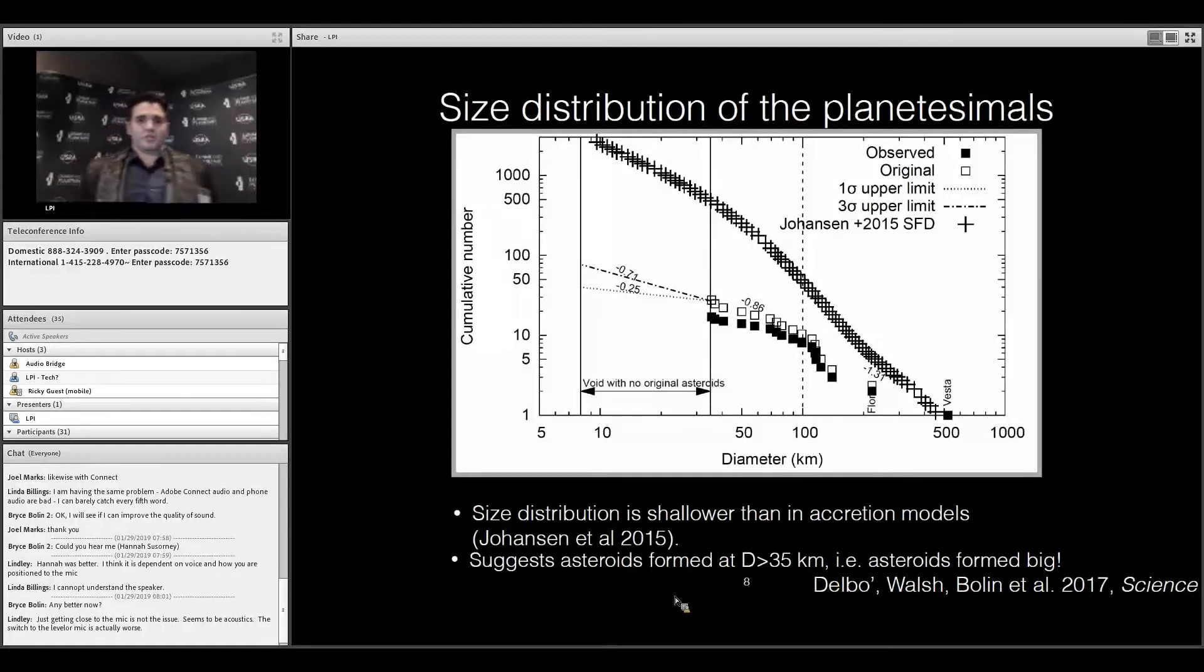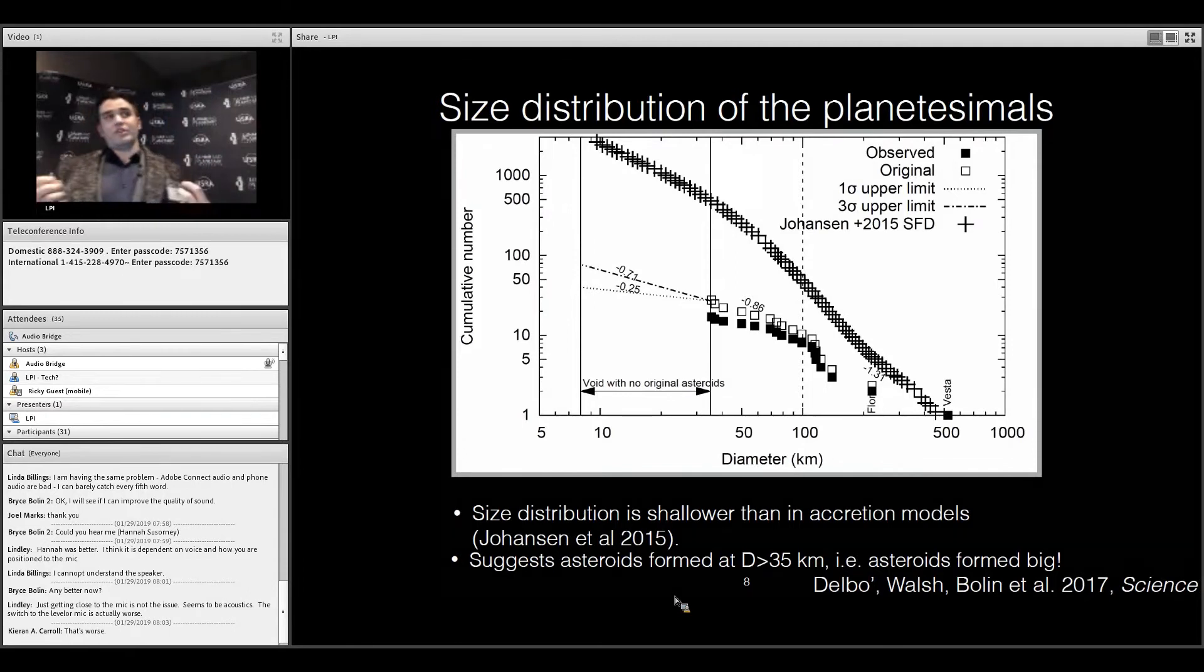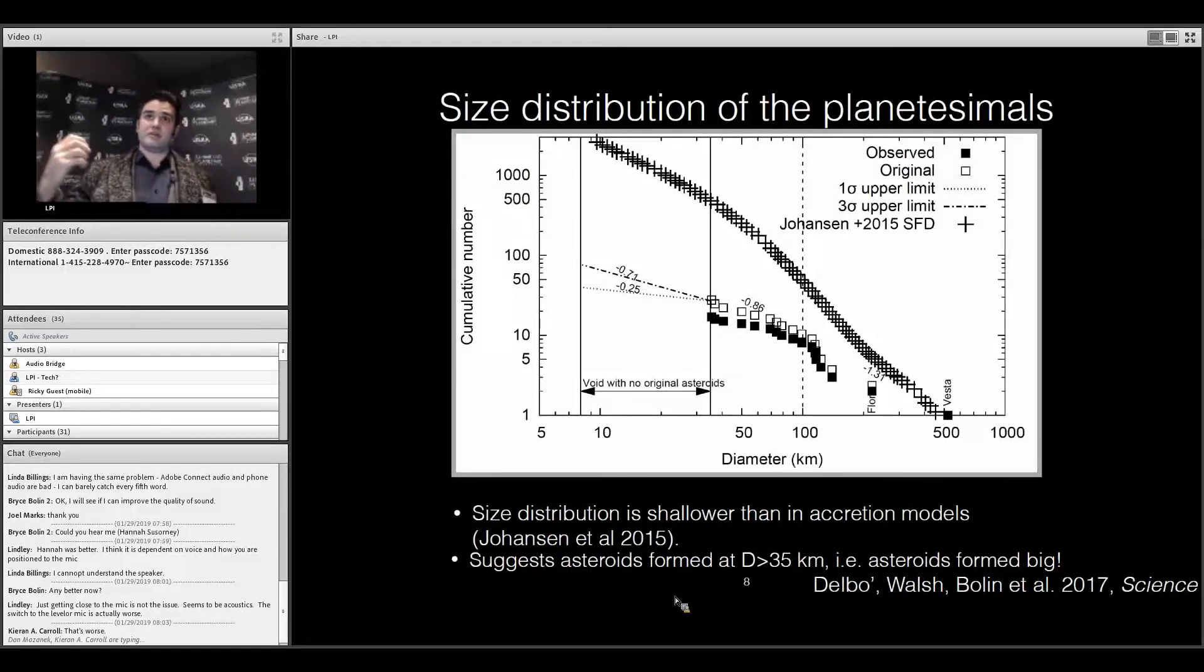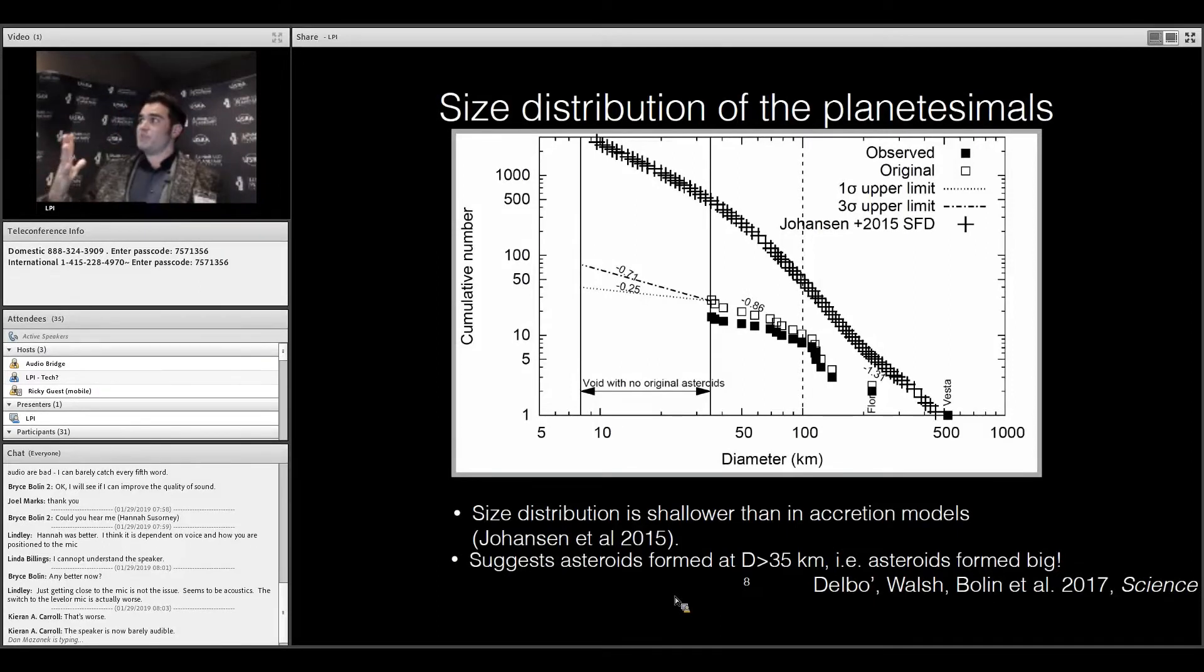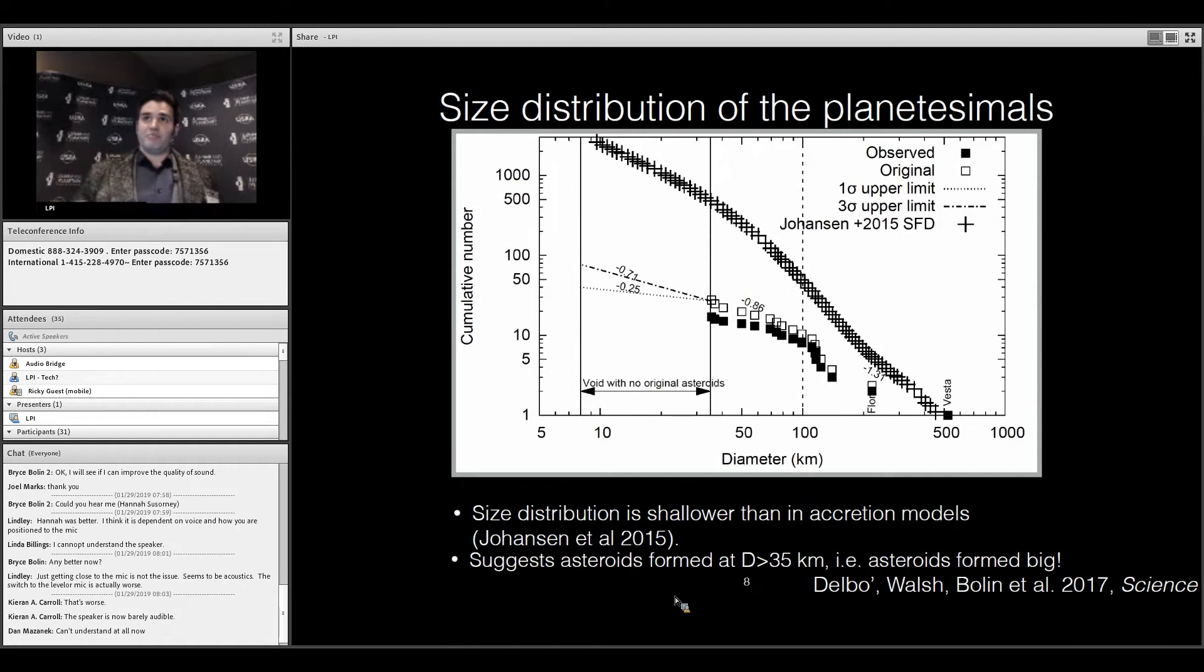The original population would have been different. Even in the asteroid belt, considering the collision rates, this shallow size distribution suggests evidence for the gravitational collapse scenario.